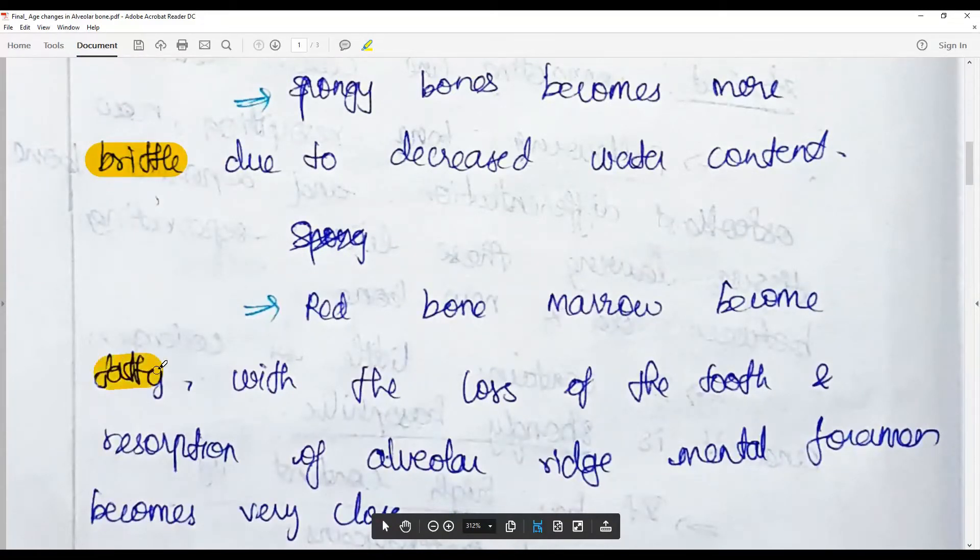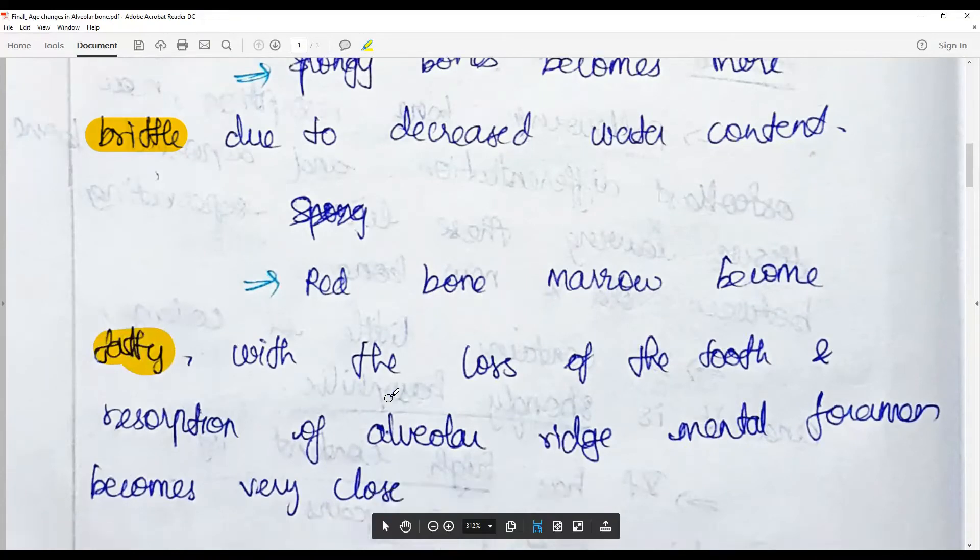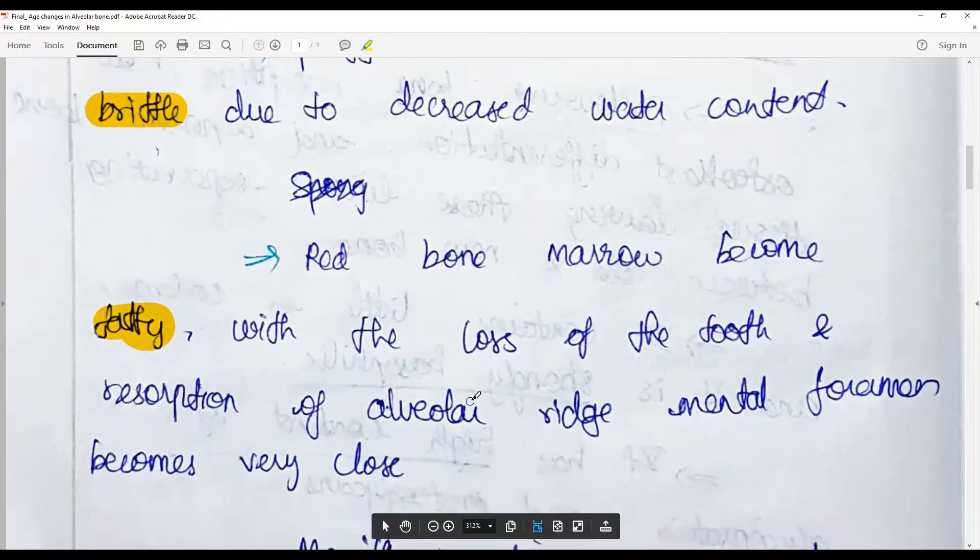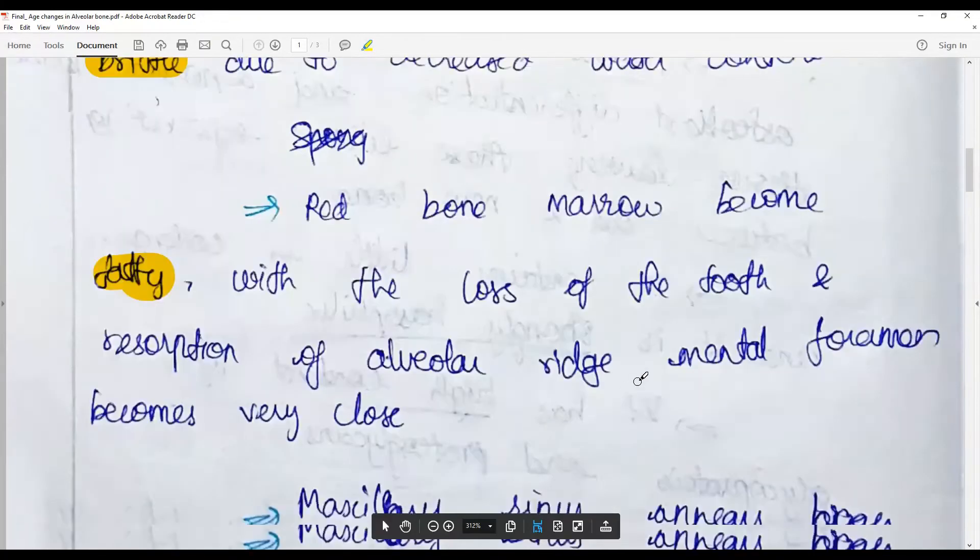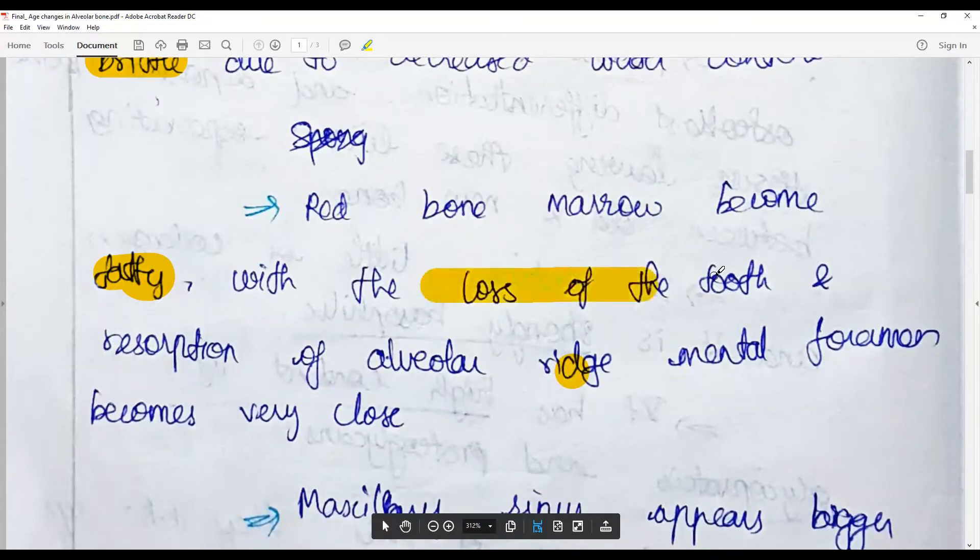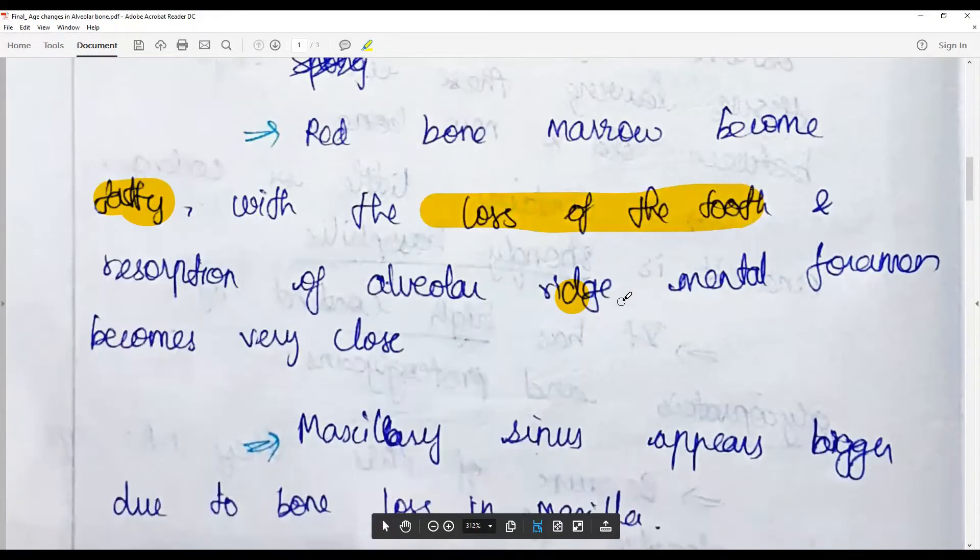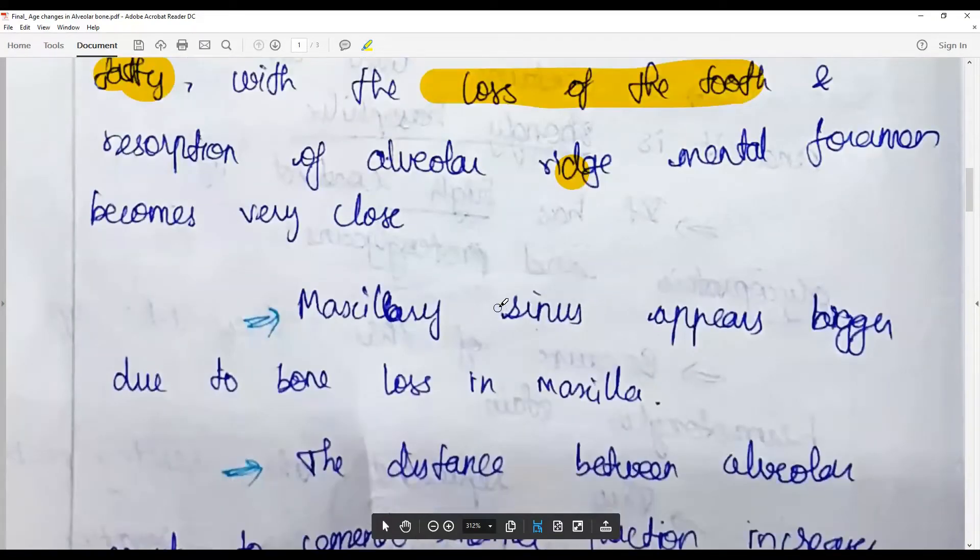With a loss of tooth, resorption of alveolar ridge and mental foramen may become close. But that is in case there is loss of tooth. There may be alveolar height reduction because of this.